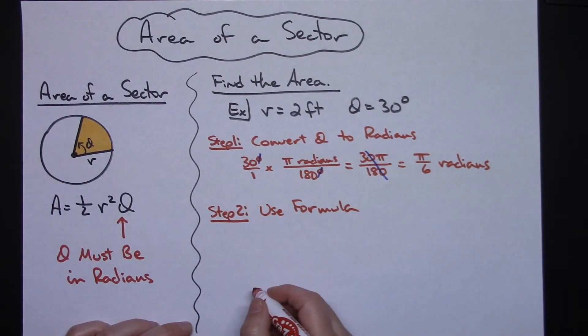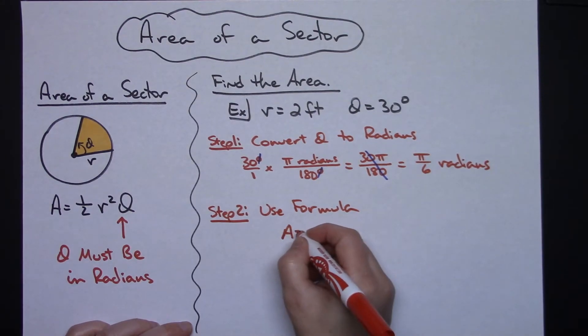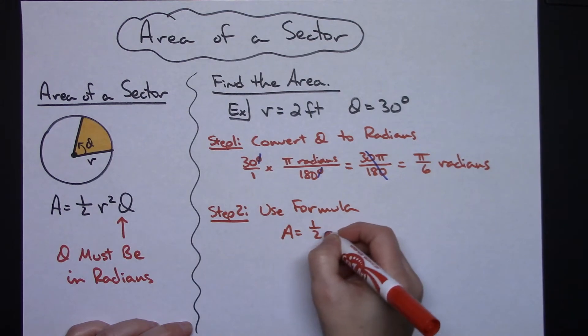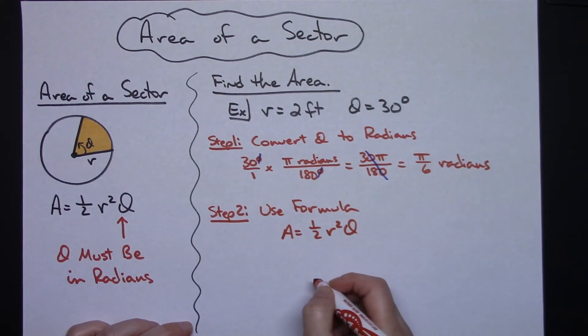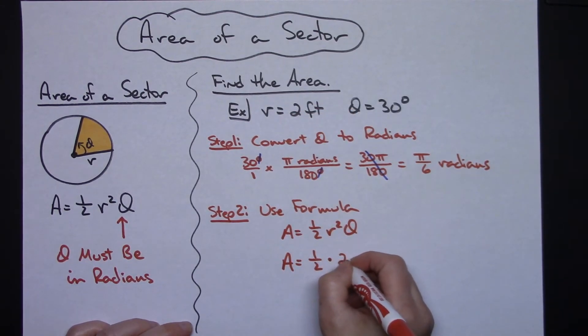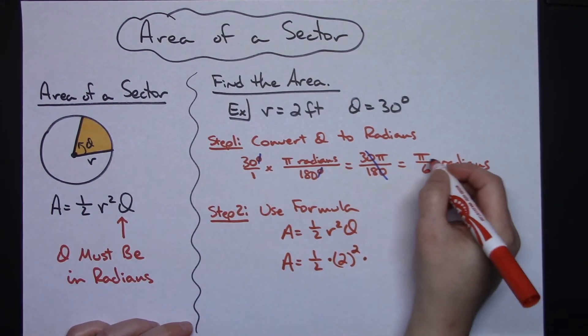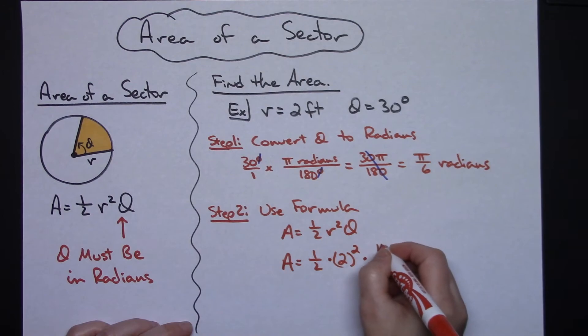My formula, let's actually show all of our steps here. A equals one-half r squared theta. I'm trying to find A. My one-half is going to stay, my r is 2, so 2 squared. And we converted our theta of 30 degrees into pi over 6.